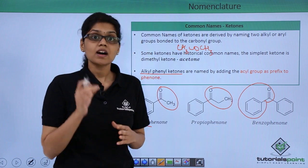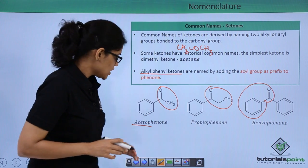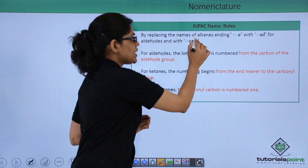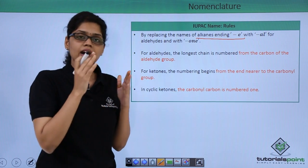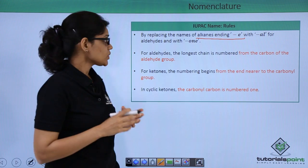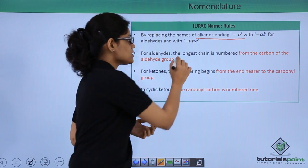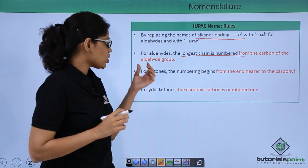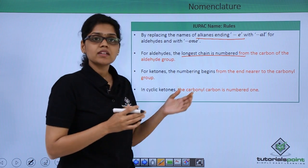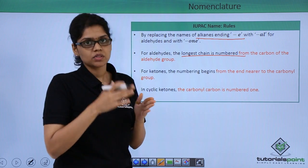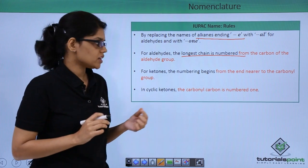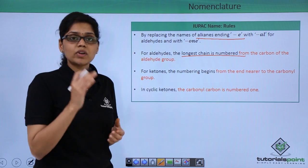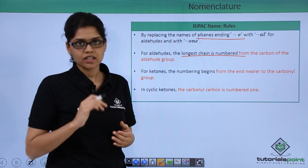Let us now see how to write the IUPAC name of aldehydes and ketones. The IUPAC name is obtained by replacing the '-e' of the corresponding alkane with '-al' for aldehydes and '-one' for ketones. For aldehydes, numbering is done from the carbon of the CHO group. For ketones, numbering begins from the end closer to the C=O group. In cyclic ketones, the carbonyl carbon is numbered 1.